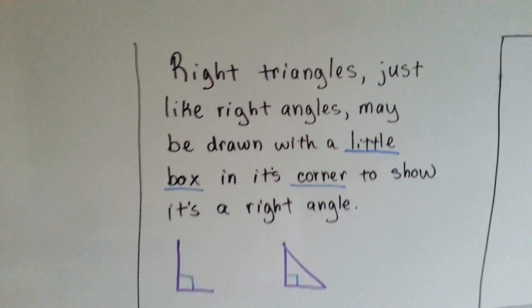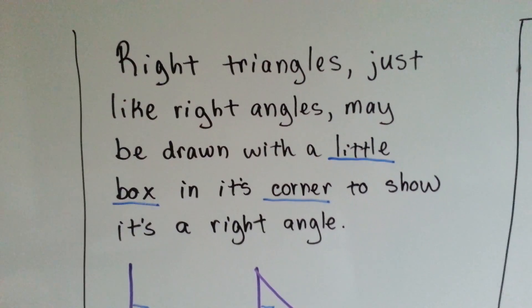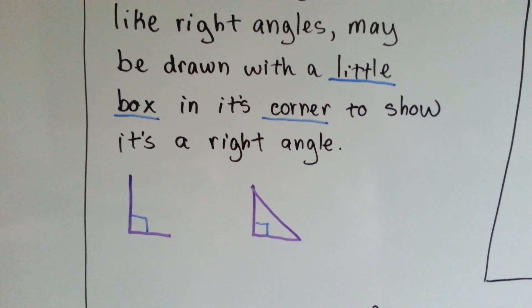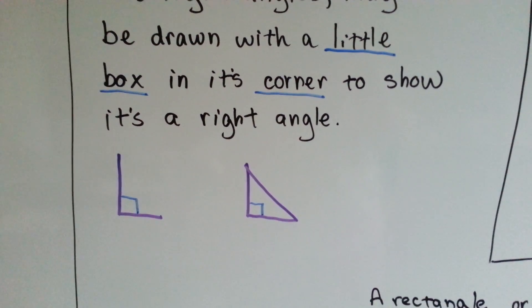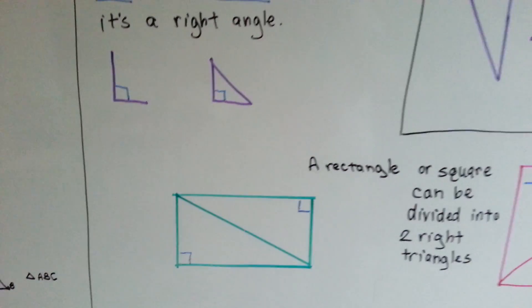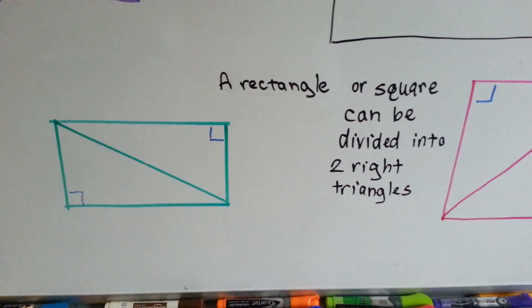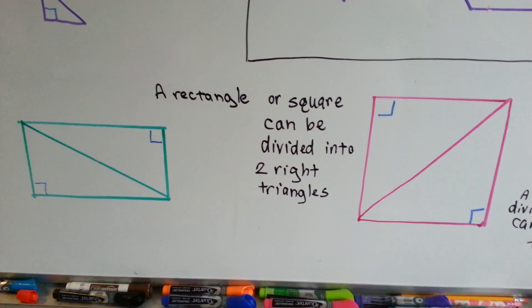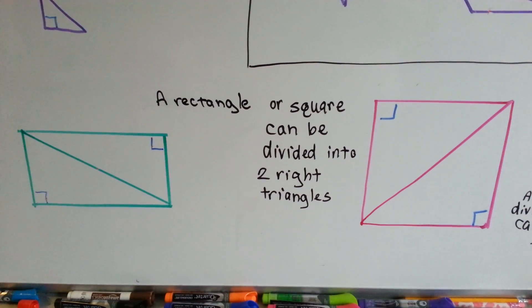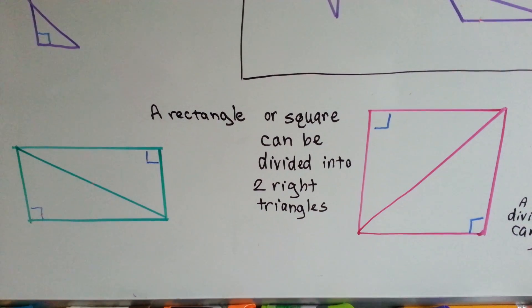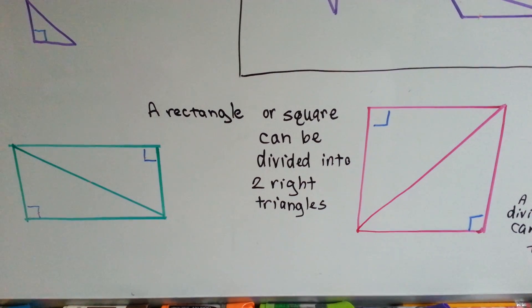Right triangles, just like right angles, may be drawn with a little box in the corner to show it's a right angle. They have this little box there. You'll see it in your books and stuff. A rectangle or square can be divided into two right triangles. If we draw a line from one vertex across it to the other vertex, it'll create two right triangles.